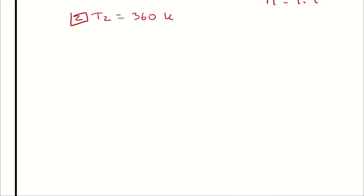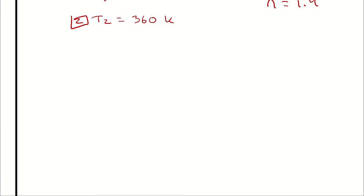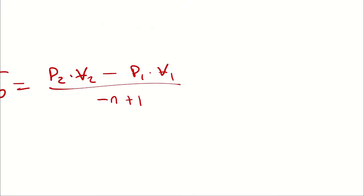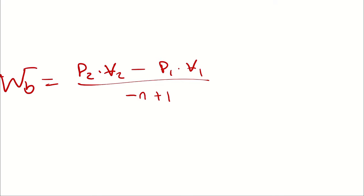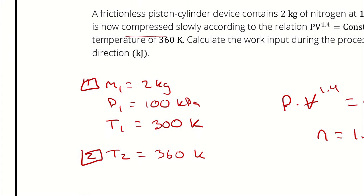So because this is a polytropic process, and the polytropic exponent value is 1.4, I can say the boundary work for this process is P2V2 minus P1V1 divided by negative n plus 1. I know n. I know P1. But I don't know P2, nor do I know either volume.